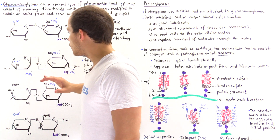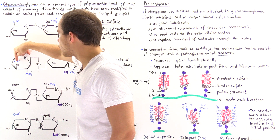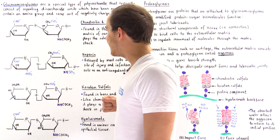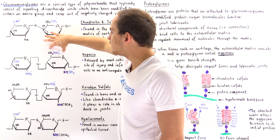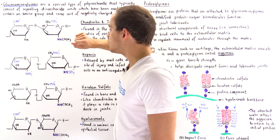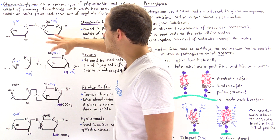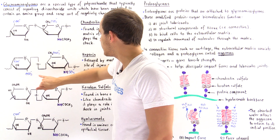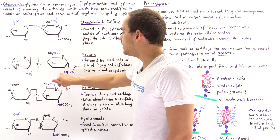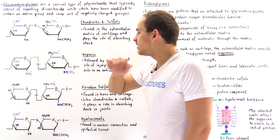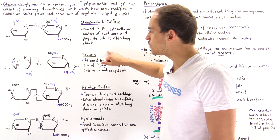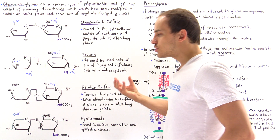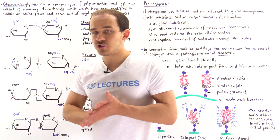On the first sugar of heparin's disaccharide unit, we have a carboxylate group bearing a negative charge and a sulfate group that also bears a negative charge. On the second sugar, we have a sulfate group attached to a carbon, and the amino group also contains a sulfate. So heparin contains many negative charges, and these negative charges give heparin its functionality.